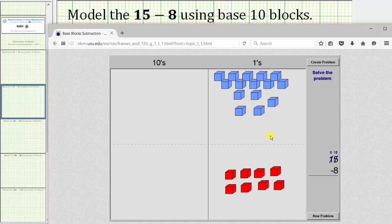So we subtract 1, 2, 3, 4, 5, 6, 7, 8 units. We are left with 7 units. 15 minus 8 equals 7. I hope you found this helpful.